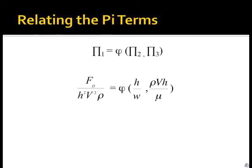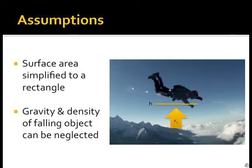The pi terms are related through a function, phi, that can be determined experimentally. While calculating these functions, we had to make some assumptions. Surface area is simplified to a rectangle, and gravity and density of a falling object can be neglected.